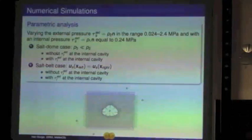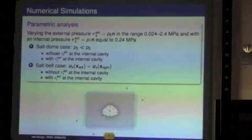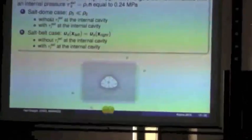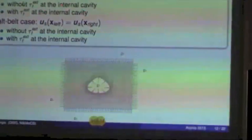In the second case we have a belt of salt, a very long strip of salt. We consider as boundary conditions here and here a periodic one in which the displacement of the left side equals the displacement of the right side. Then we compare sub-cases where we do not consider Tau_F on the internal boundary of the cavity versus when we consider that external action.